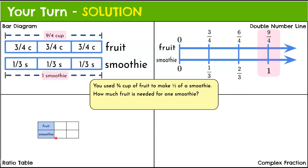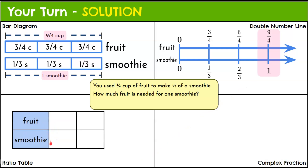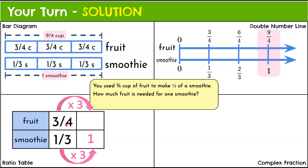Now the ratio table — fruit and smoothie. Our given rate is three-fourths of a cup for one-third of a smoothie. We want the smoothie quantity to be one. To get from one-third to one, we multiply by three — and we must do the same to the fruit: three-fourths times three is nine-fourths. So nine-fourths cups of fruit per smoothie.